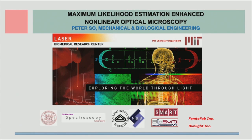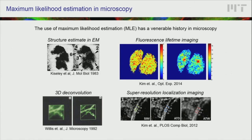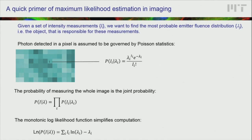Specifically, I want to talk about computation-enhanced nonlinear optical microscopy based on maximum likelihood estimation. Maximum likelihood estimation is not a new area — it has been used in imaging for decades. Electron microscopy has used this approach to synthesize data from multiple particles to generate a consensus structure. It has been used for 3D wide-field image stacks to generate deconvoluted images, for fluorescence lifetime data, and it is the basis for a number of super-resolution imaging techniques today.